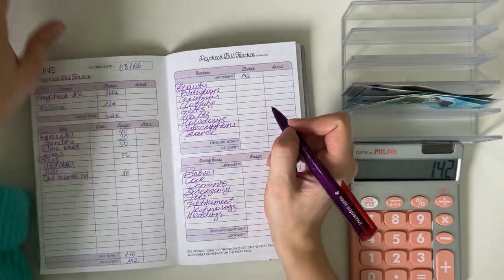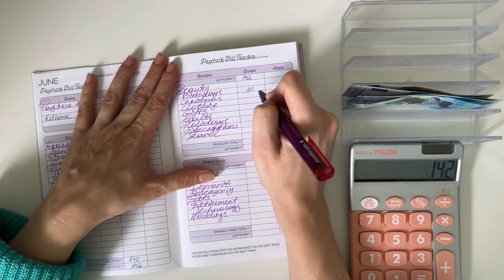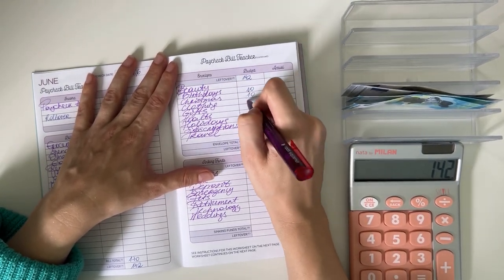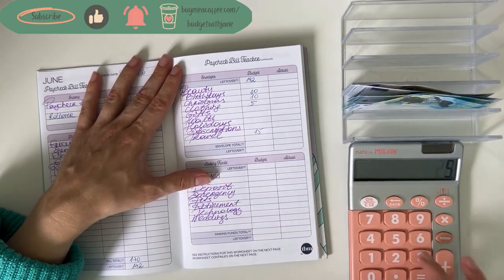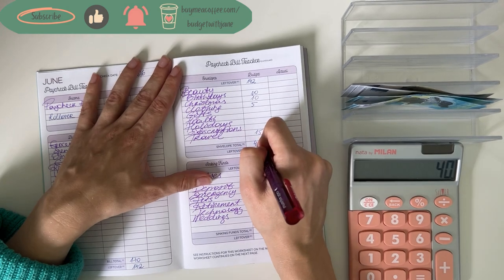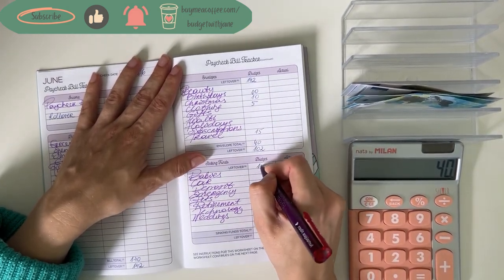Short-term sinking funds: birthdays is going to get 10, Christmas 10, clothing 5, and travel 15. So that's 40 euros. So 142 minus 40 is 102, we're bringing that down here to long-term sinking funds.